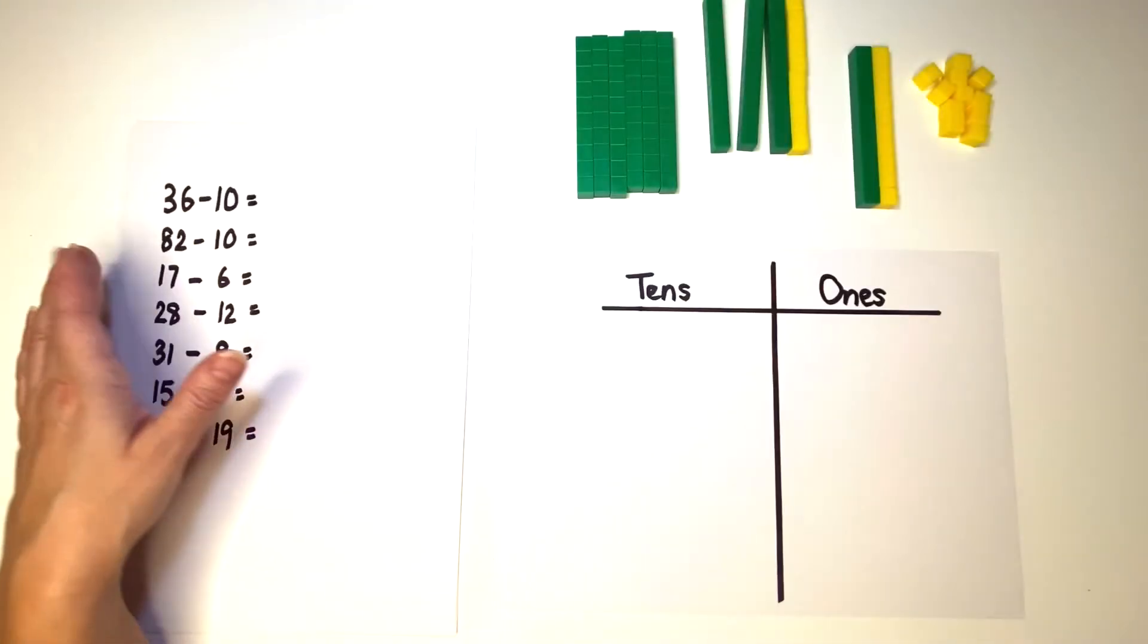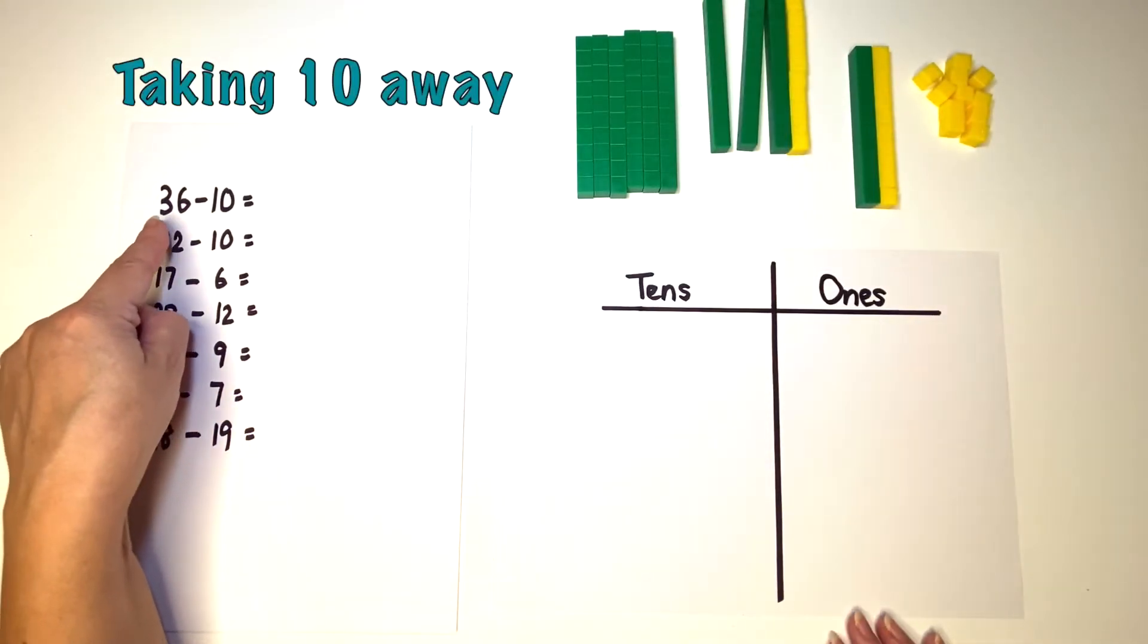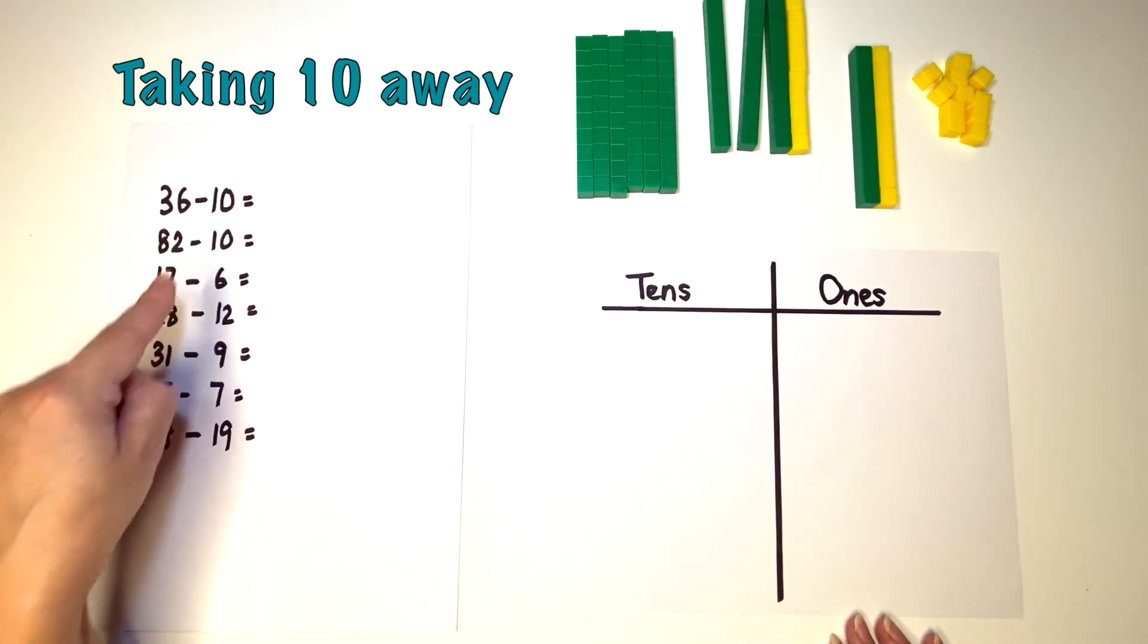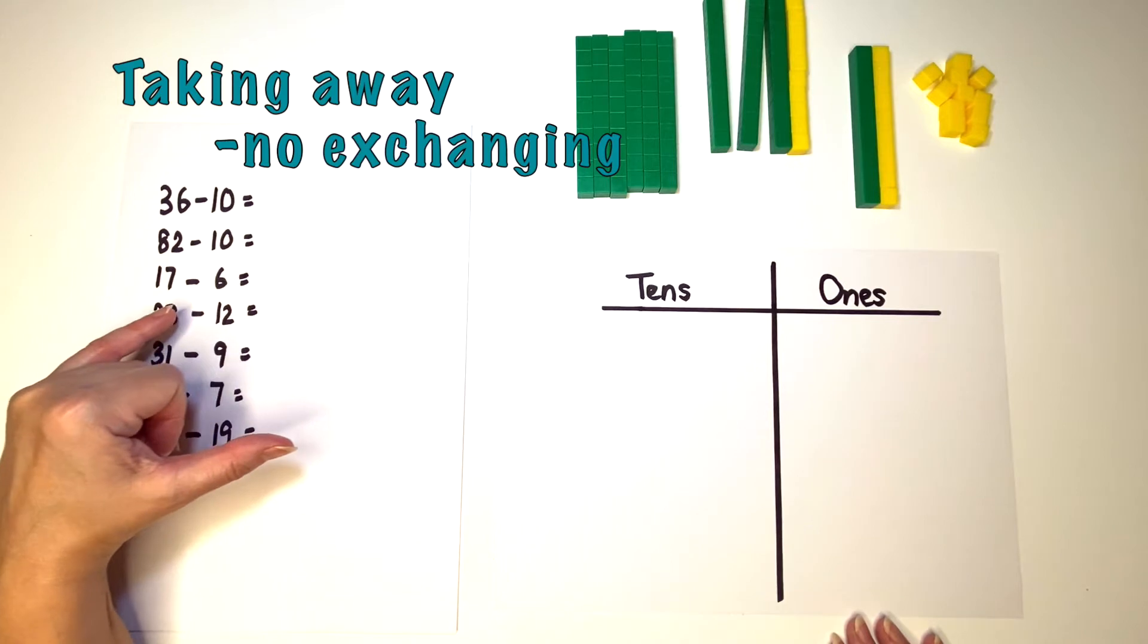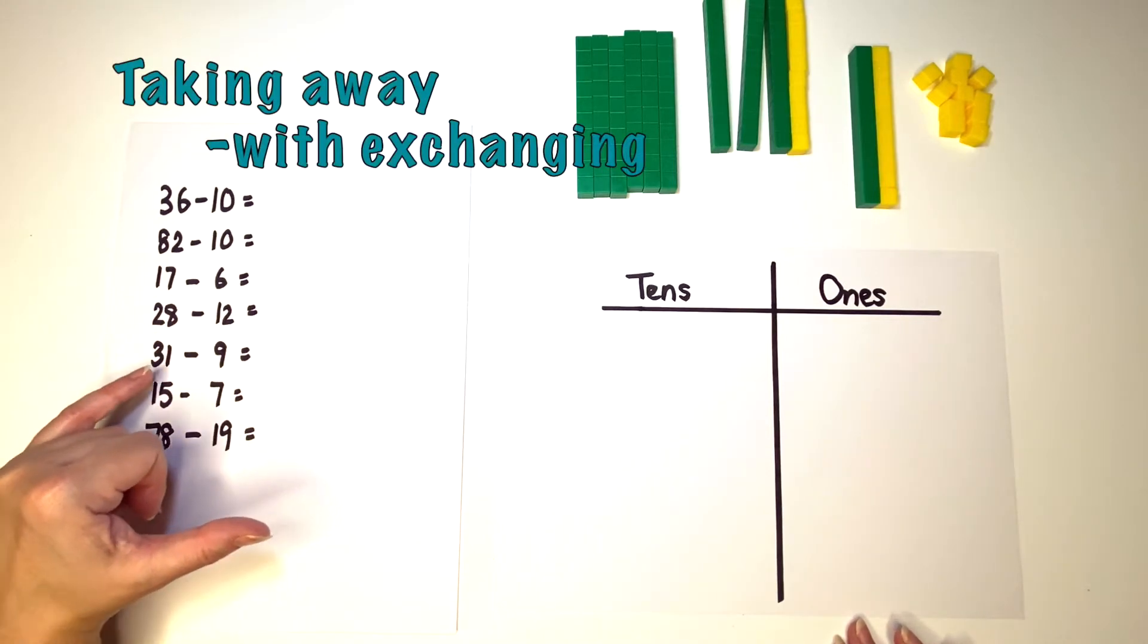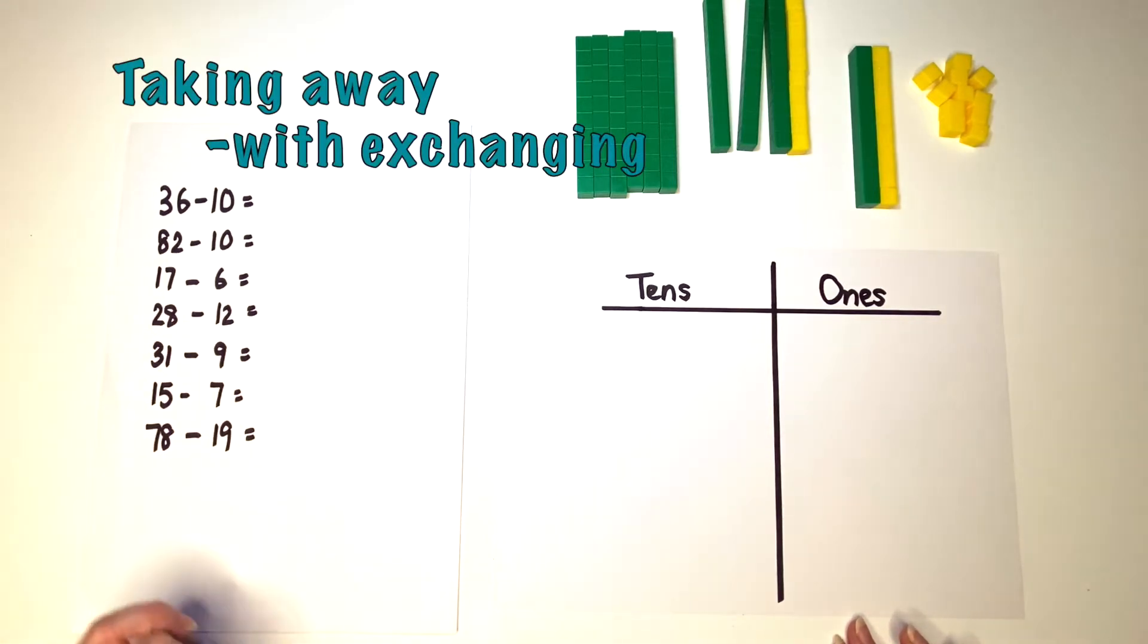So I've got some subtraction sentences here. The first ones are very straightforward. They're just taking 10 away. These ones are taking the ones away without exchanging and here we've got three examples of exchanging.